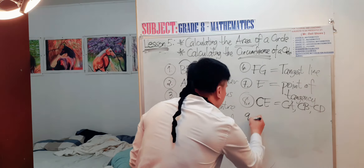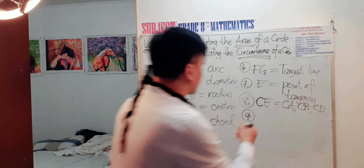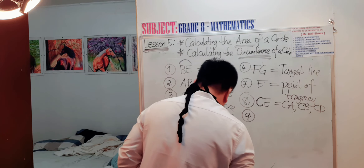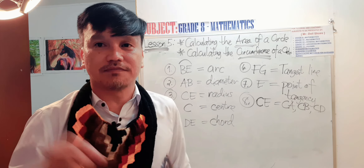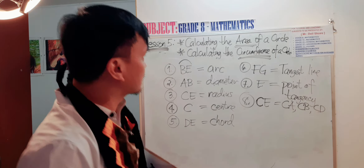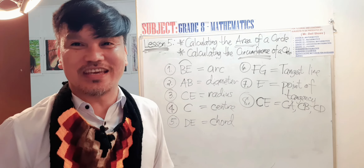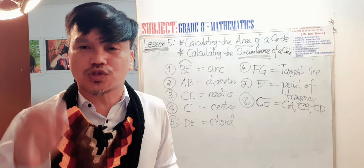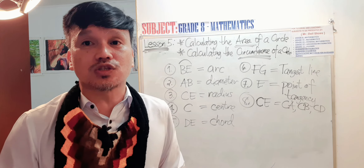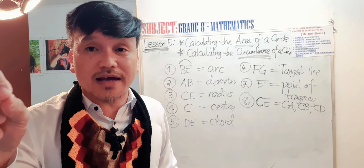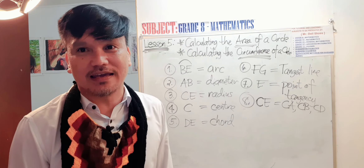Question number nine would be the length of A-B, but we'll go only up to question number eight. After this, we'll have part three of calculating the area of a circle and circumference of a circle using the formula. I hope you are already familiar with the parts of the circle so it would be easy to solve any problems involving a circle.